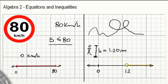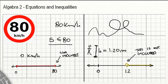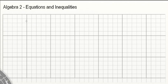When the dot is not filled in, it basically means that number is not included. This is different from our previous example where the point was included. If you're driving at 80 kilometers per hour, you're following the rules. But if you are exactly 1.2 meters, you're not following the rules — it's not included, only if you're taller than that. So let's take a look at a few numeric examples.